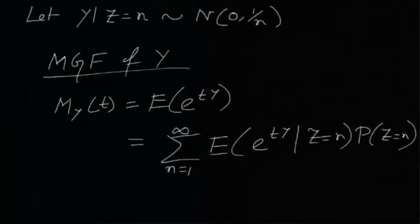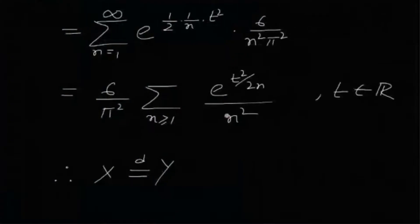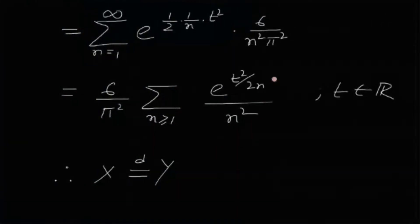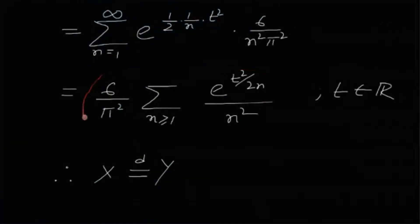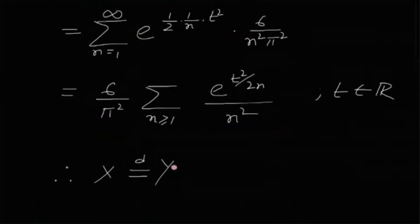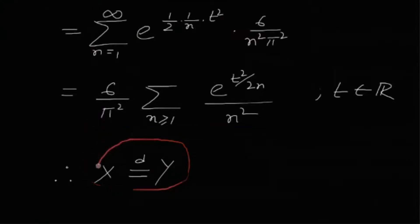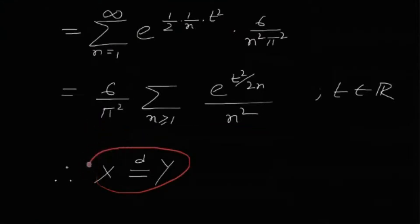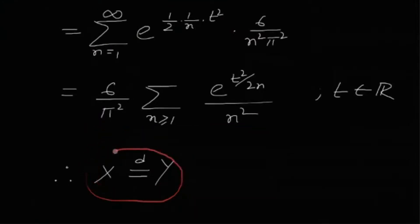This is the MGF of X, and we have found out that this is also the MGF of Y. Therefore, by the uniqueness theorem of MGFs, X and Y are identically distributed.